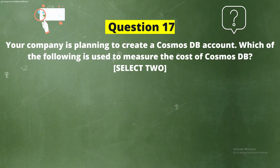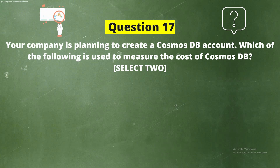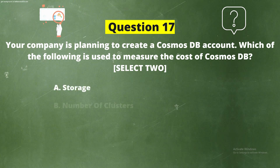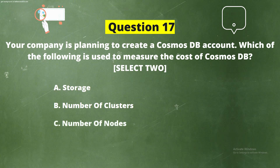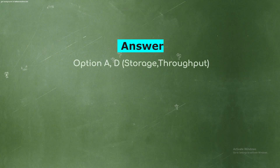Question 17. Your company is planning to create a Cosmos DB account. Which of the following is used to measure the cost of Cosmos DB? Select two options. Option A: Storage. Option B: Number of Clusters. Option C: Number of Nodes. Option D: Throughput. The correct answer is Option A and D — Storage and Throughput.